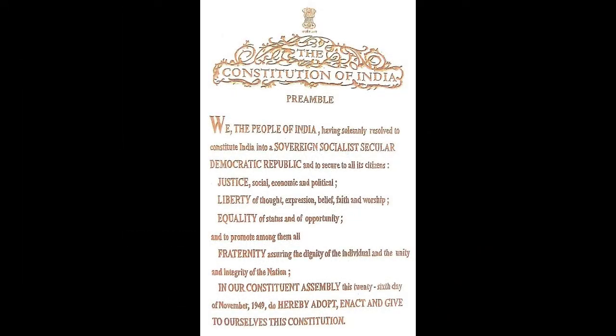The Constitution of India Preamble: We, the people of India, having solemnly resolved to constitute India into a sovereign, socialist, secular, democratic republic and to secure to all its citizens Justice — social, economic and political — Liberty of thought, expression, belief, faith and worship, Equality of status and of opportunity, and to promote among them all fraternity, assuring the dignity of the individual and the unity and integrity of the nation. In our Constituent Assembly, this 26th day of November 1949, do hereby adopt, enact and give to ourselves this Constitution.